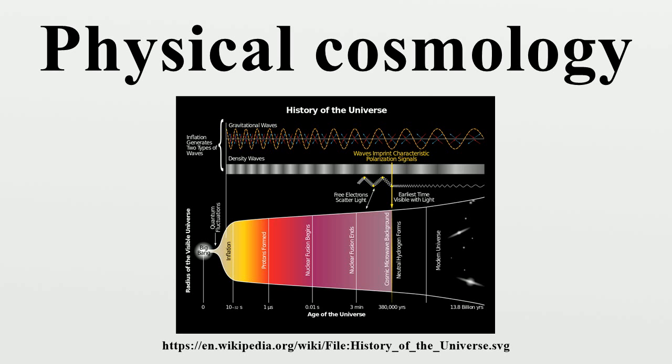The history of the universe is a central issue in cosmology. The history of the universe is divided into different periods called epochs, according to the dominant forces and processes in each period. The standard cosmological model is known as the Lambda-CDM model.